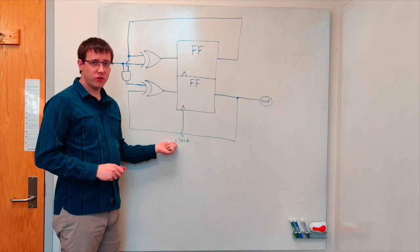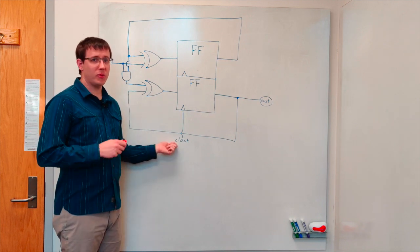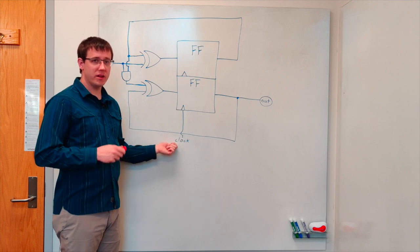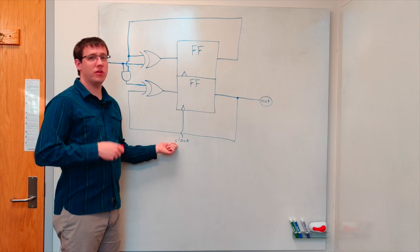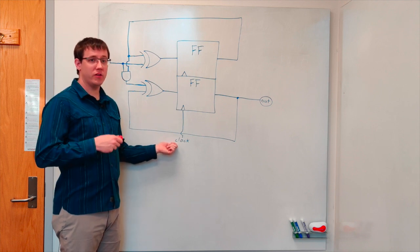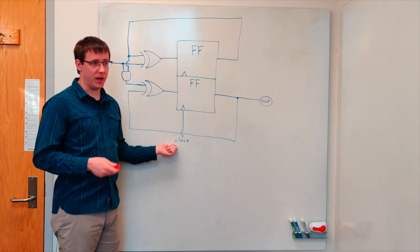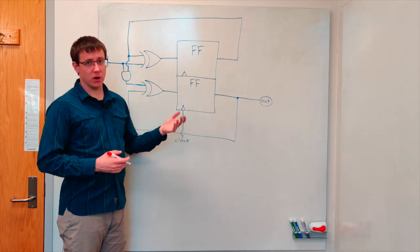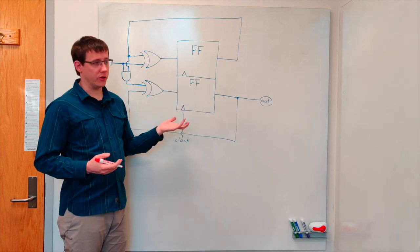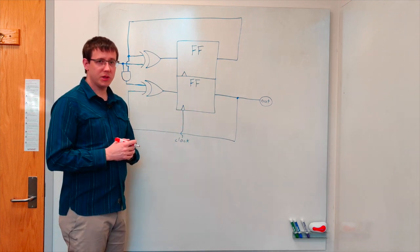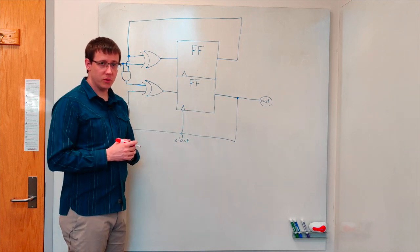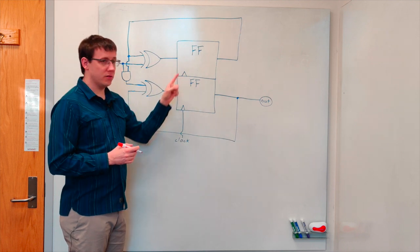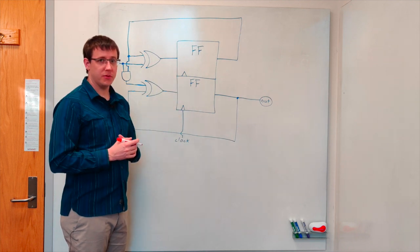Because sequential circuits with memory components include a clock signal, we can think about the circuit in discrete time steps. This circuit contains two flip-flops, or a two-bit register. To figure out what this circuit will do, we need to consider the current status of these flip-flops.